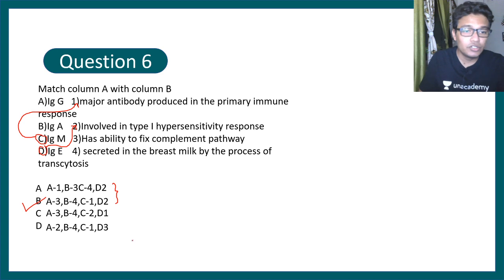Let's just verify the other options. A equals 3, that means IgG. IgG has the ability to fix complement pathway. It is lesser than IgM but it still has it. And B is 4, B means IgA. Yes, IgA is found in breast milk and other secretions and it is secreted by the process of transcytosis. If you want to learn about transcytosis, the video is given in the i button.